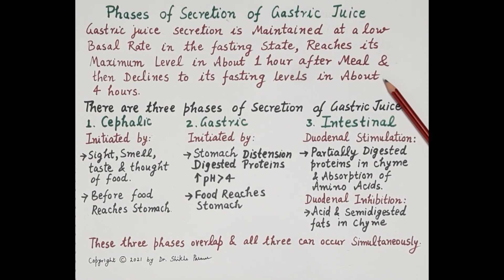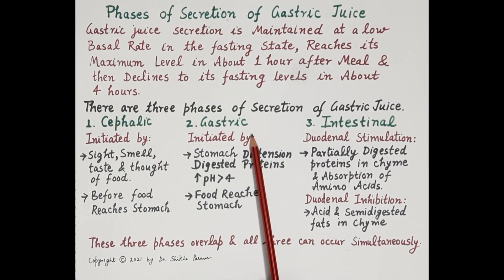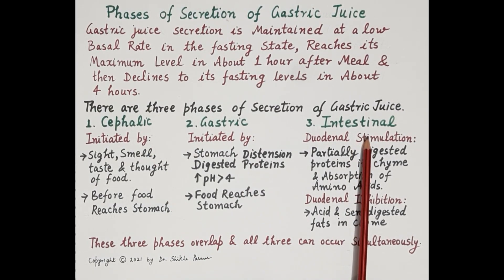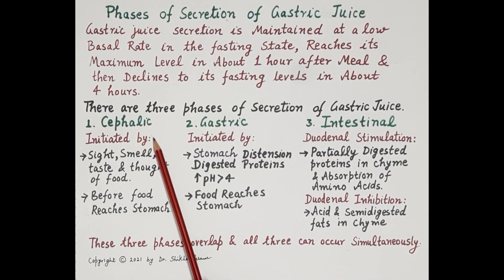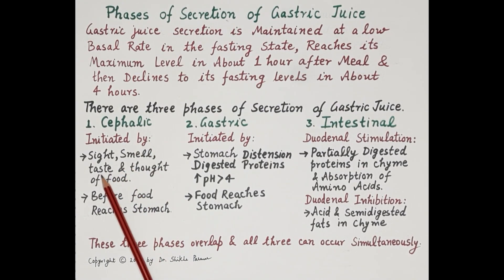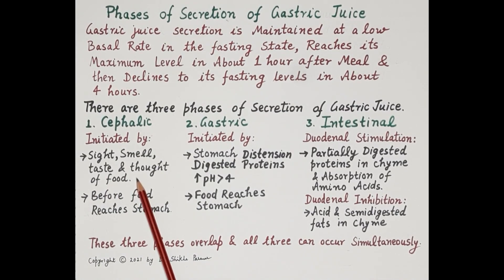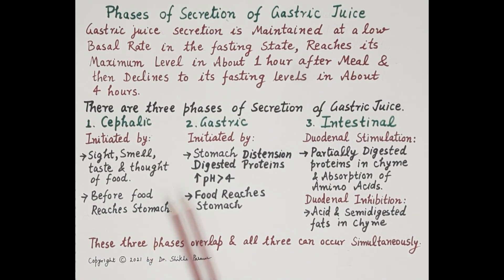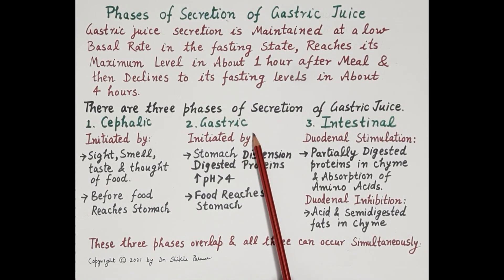There are three phases of secretion of gastric juice: the cephalic phase, the gastric phase, and the intestinal phase. During the cephalic phase, around 30 percent of total gastric juice secretion occurs. Sight, smell, taste, and the thought of food initiates this phase, and gastric secretion occurs before the food reaches the stomach.